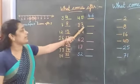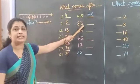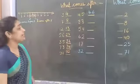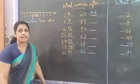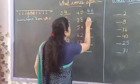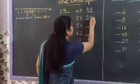And next number is 33. What comes after 33? 3, 4 — that is 34. So 33 after is 34.